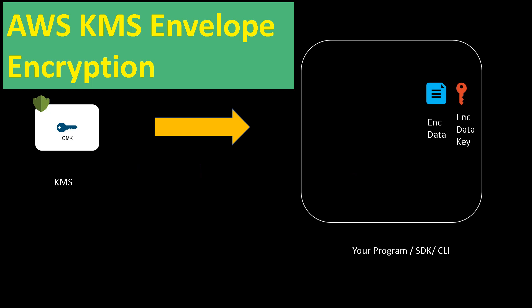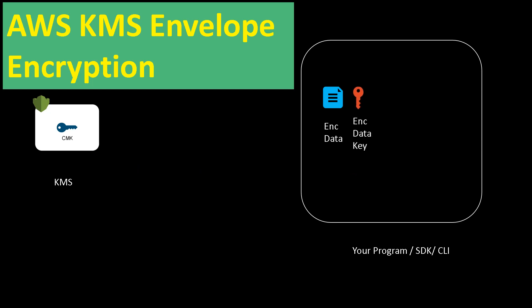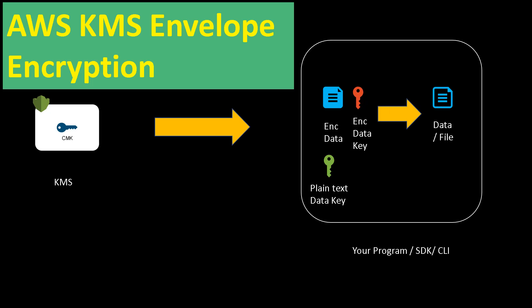Now you have your encrypted data as well as the encrypted data key, and you can delete your original file. When you want to decrypt the data file, you use the encrypted data key and send it over to AWS KMS to be decrypted. If you have the right permissions, you get your plaintext data key back, and using that you decrypt your encrypted data file to get the original file back — which could be gigabytes or hundreds of gigabytes. This is how envelope encryption works, and it's not really a workaround — sending a really big file to KMS wouldn't have been a great user experience anyway.